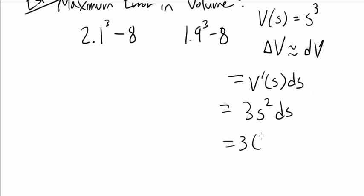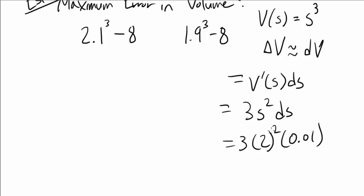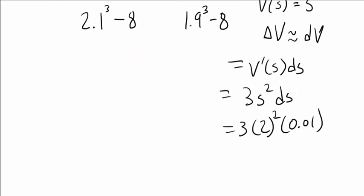And our S was 2, so 3 times 2 squared times... was it 0.01? No, 0.1. So 3 times 2² times 0.1.